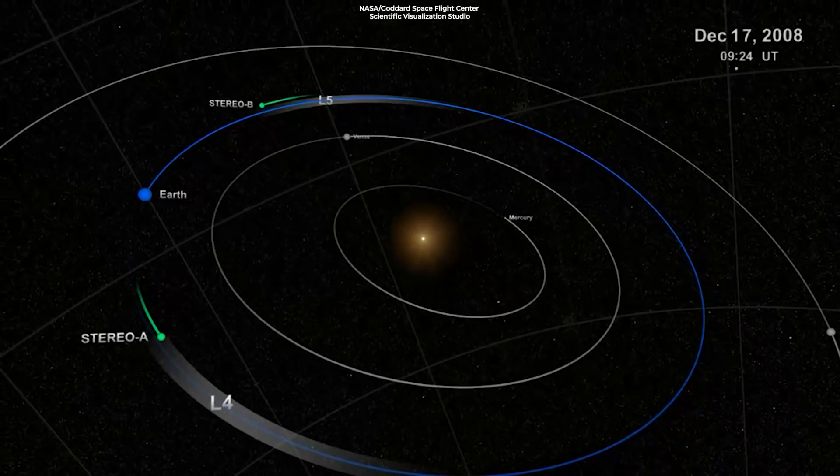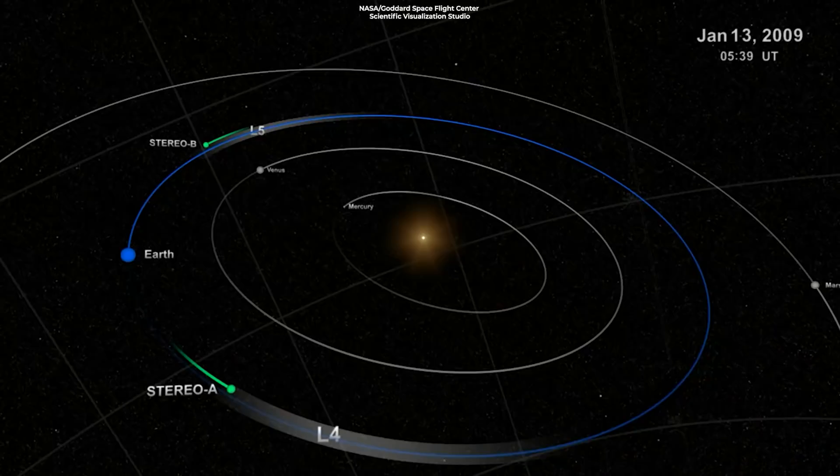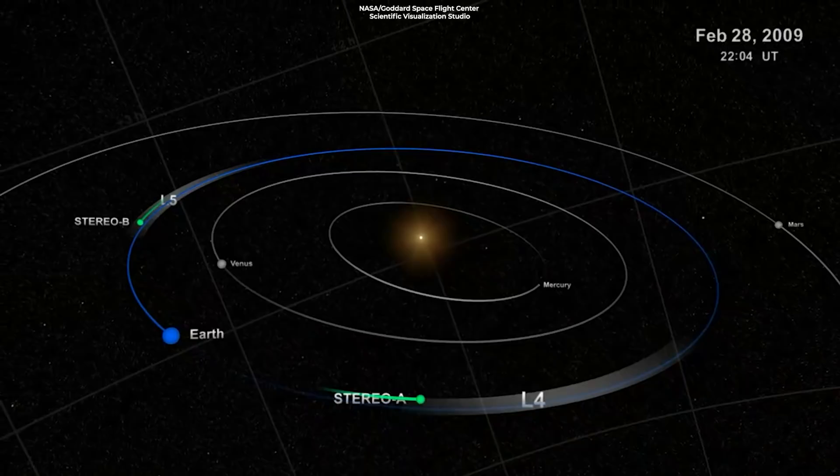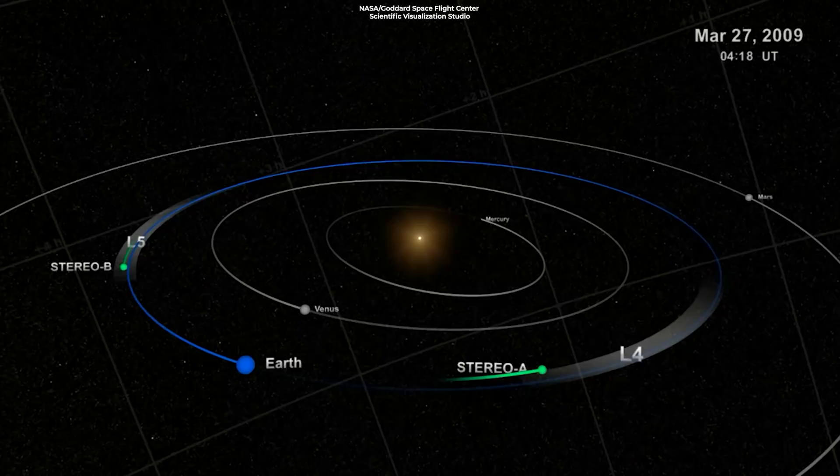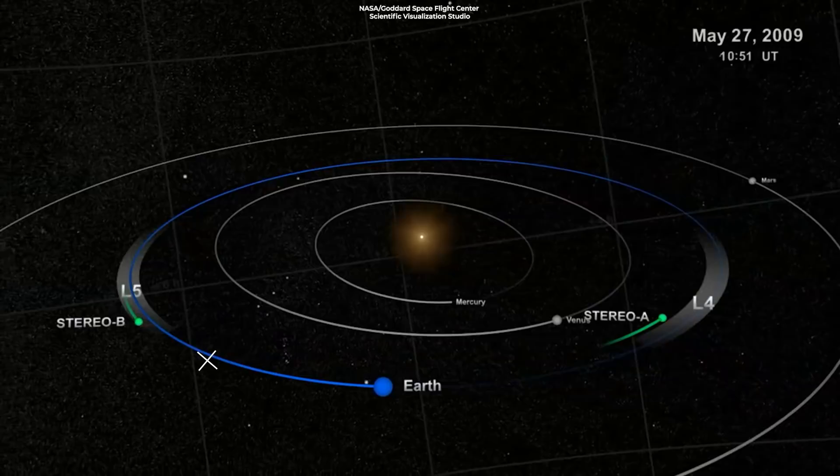However, points L4 and L5 are stable, like a ball in a huge bowl. These points are located along Earth's orbit at 60 degrees ahead of and behind Earth, forming the apex of two equilateral triangles, with the large masses, for example Earth and the Sun, as their vertices.